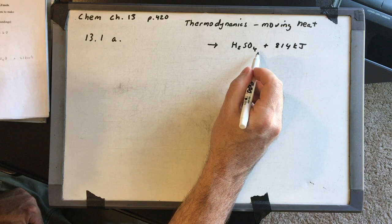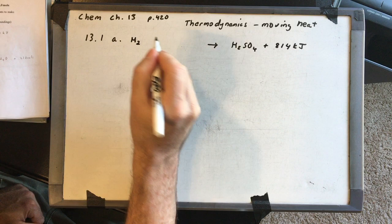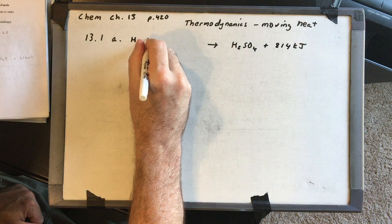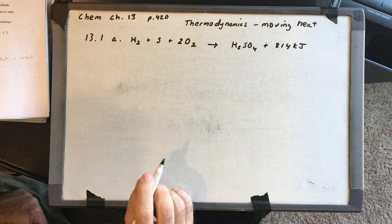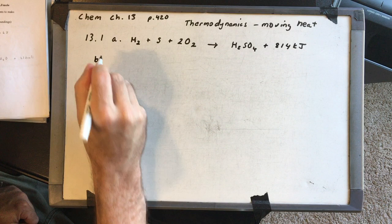For a formation reaction, take the individual elements of H2SO4 as reactants. Hydrogen, being a homonuclear diatomic, has to be H2, plus sulfur, plus oxygen — also a homonuclear diatomic, so O2. We need to balance, so we put a 2 in front of O2. Now we're balanced, and the product is H2SO4 plus 814 kilojoules.